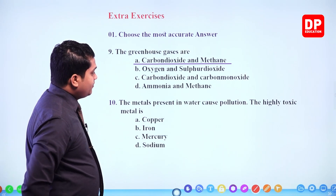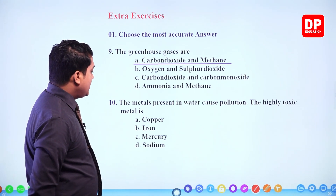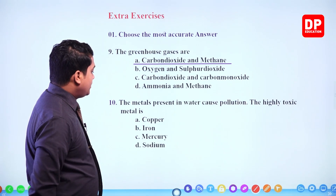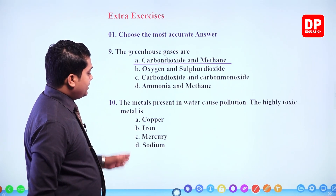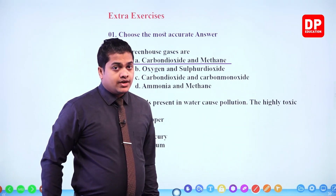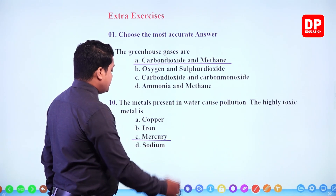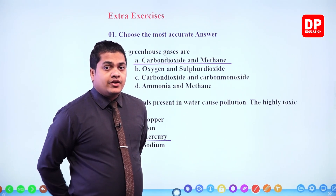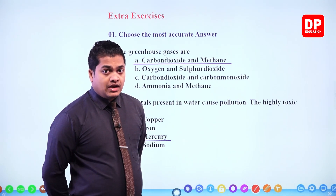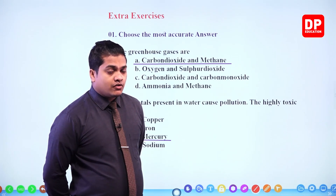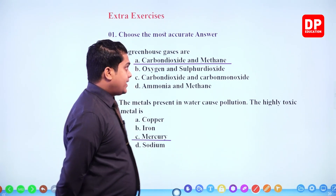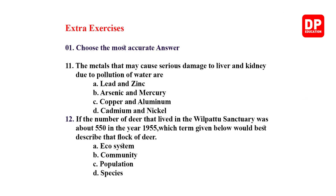Next one: the metals present in water that cause pollution — the highly toxic metal is copper, iron, mercury, or sodium. Out of these, the highly toxic metal is mercury, because mercury has the ability to poison our bloodstreams and even cause organ failure in the kidney and liver. So mercury is the most poisonous substance out of the given responses.